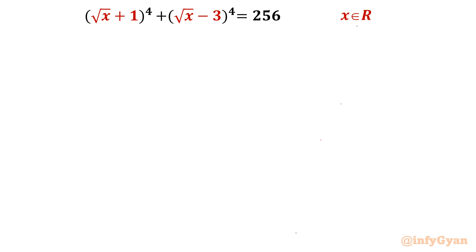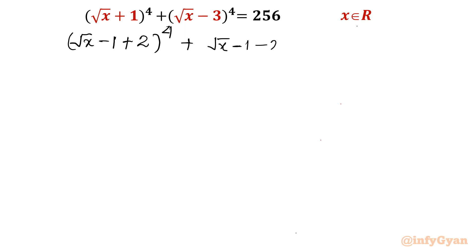While solving this problem, we will use algebraic identities, we will use the quadratic equation, we will use algebraic manipulation and we will conclude our result. I am going to split the given parenthesis: I am writing (√x - 1 + 2)⁴ + (√x - 1 - 2)⁴ = 256.